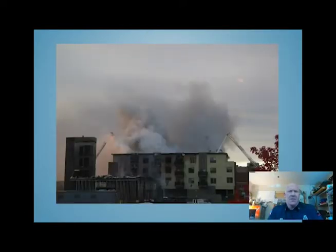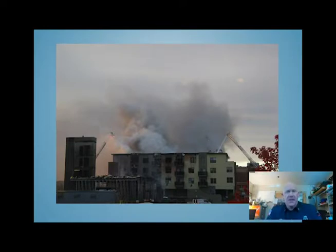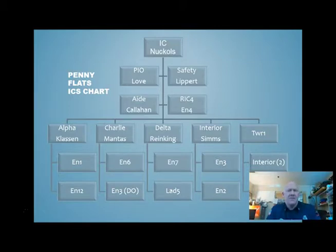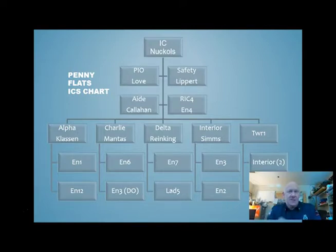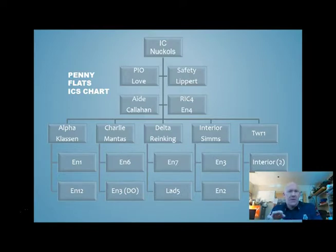This picture is of the Penny Flats fire from 2011 — you can see the three aerials up. This was actually a fire in which we set up divisions, and the next slide shows the command chart. This is a great visual for what the groups look like — consider that each one of those aerials has an engine supplying them and other work groups around them. Chief Knuckles was the incident commander. Underneath them were the PIO, safety, aide, and rapid intervention crew. Then the divisions created: alpha, charlie, delta division, and an interior division. The tower was operating as its own resource.